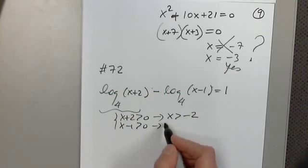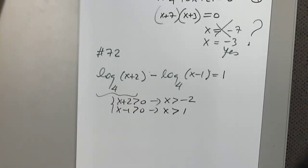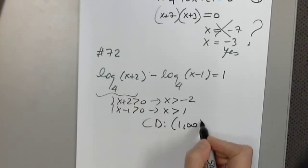This one says greater than negative 2 and this one says greater than 1. So here's greater than negative 2. From negative 2, greater than negative 2. Here is from 1, greater than 1. I need where both exist at the same time. Common domain. Very good. Good.